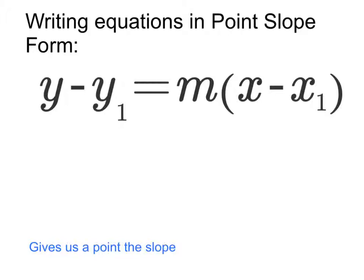In front of you we have the form y minus y₁ equals m times x minus x₁. So m right here represents the slope.